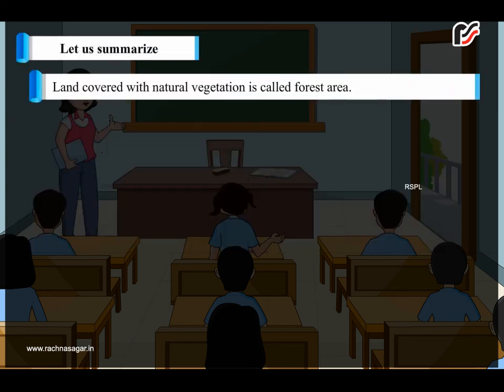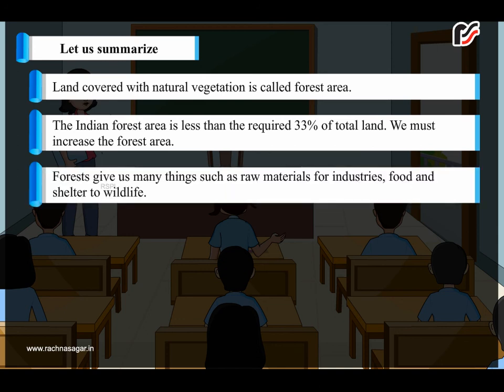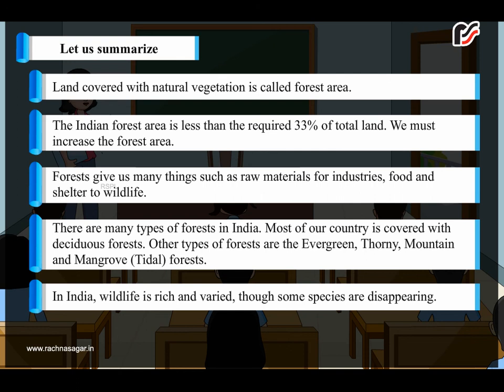Let us summarize. Land covered with natural vegetation is called forest area. The Indian forest area is less than the required 33% of total land, and we must increase the forest area. Forests give us many things such as raw materials for industries, food and shelter to wildlife. There are many types of forests in India. Most of our country is covered with deciduous forests. Other types are evergreen, thorny, mountain and mangrove tidal forests. In India, wildlife is rich and varied, though some species are disappearing. Our government is taking steps to protect wildlife.